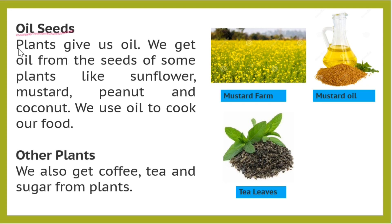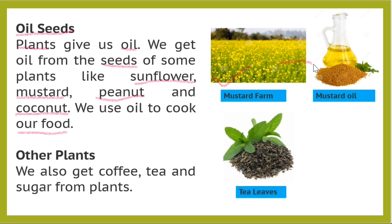The next one is oil seeds. Plants give us oil. We get oil from the seeds of plants like sunflower, mustard, peanut, and coconut. We use oil to cook our food. For example, from mustard plants we get mustard seeds, which are converted into oil used for cooking.